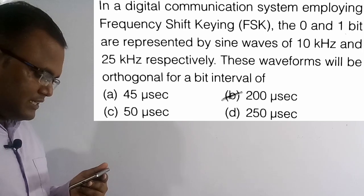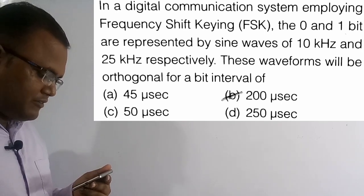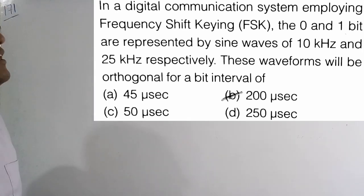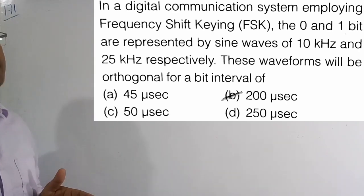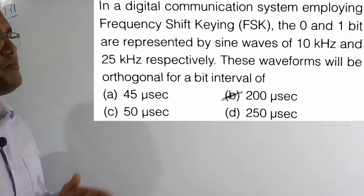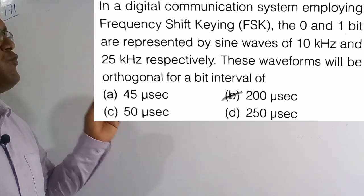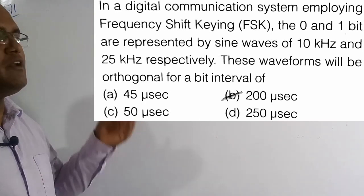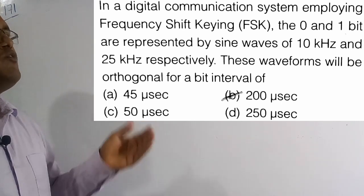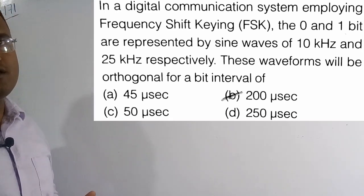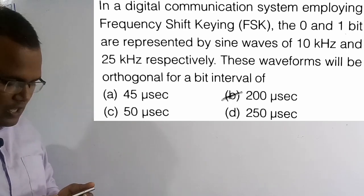We are going to solve question 171. In a digital communication system employing frequency shift keying (FSK), the zero and one bits are represented by sine waves of 10 kilohertz and 25 kilohertz respectively. These waveforms will be orthogonal for a bit interval of how much? Here orthogonal indicates we are going to use the coherent scheme. For bit one there is frequency f1 and for bit zero there is frequency f2, and we need to find bit interval TB.